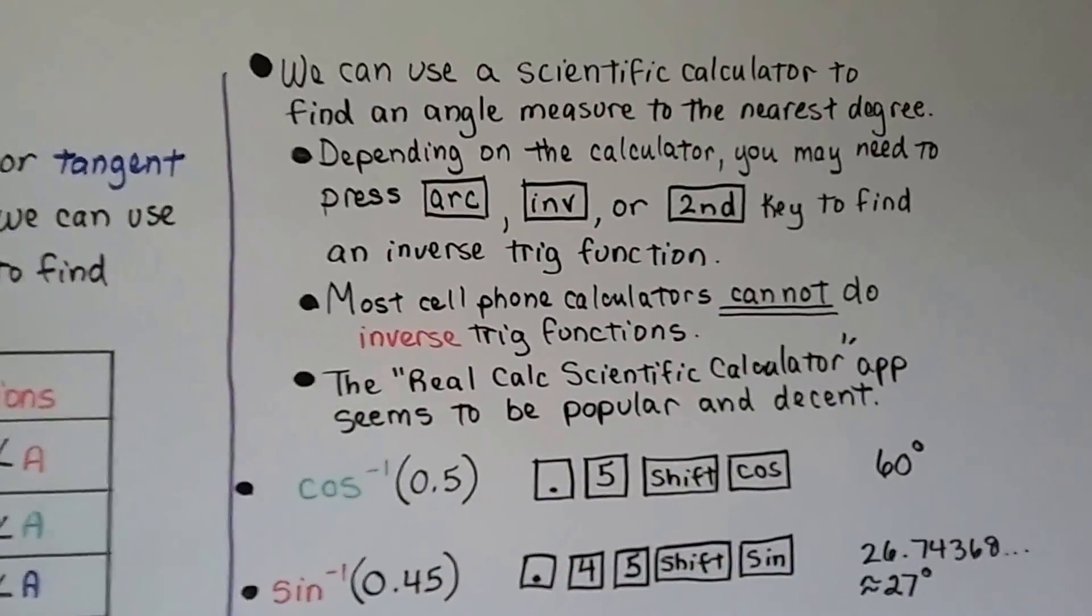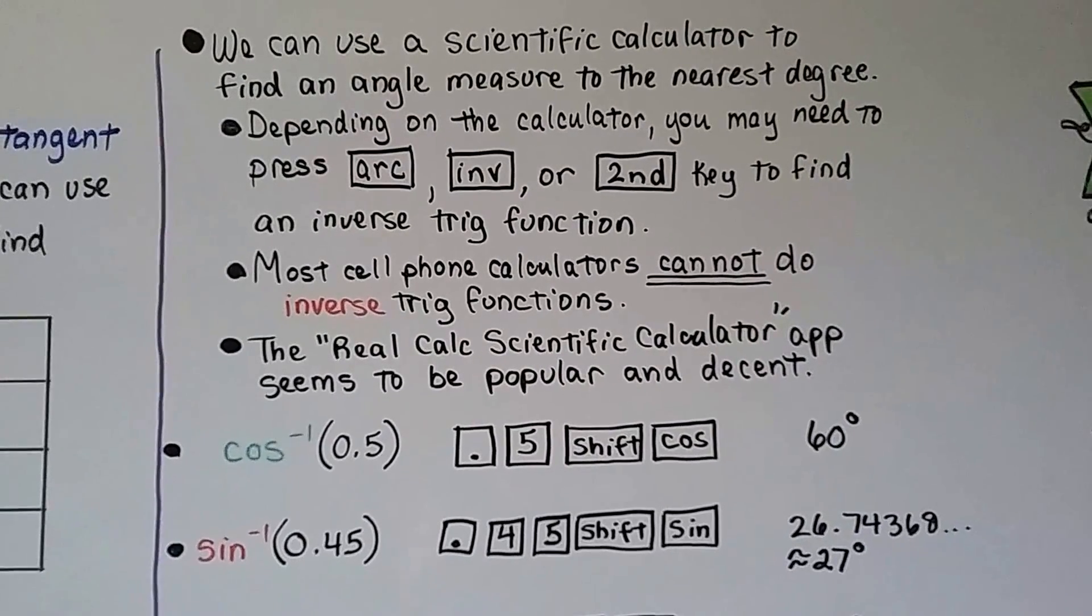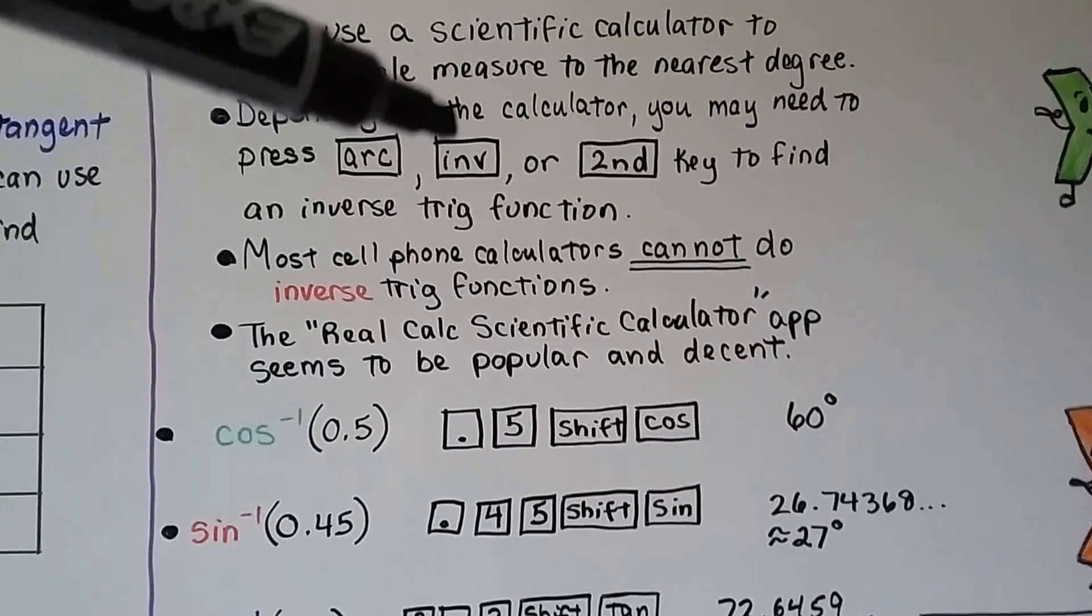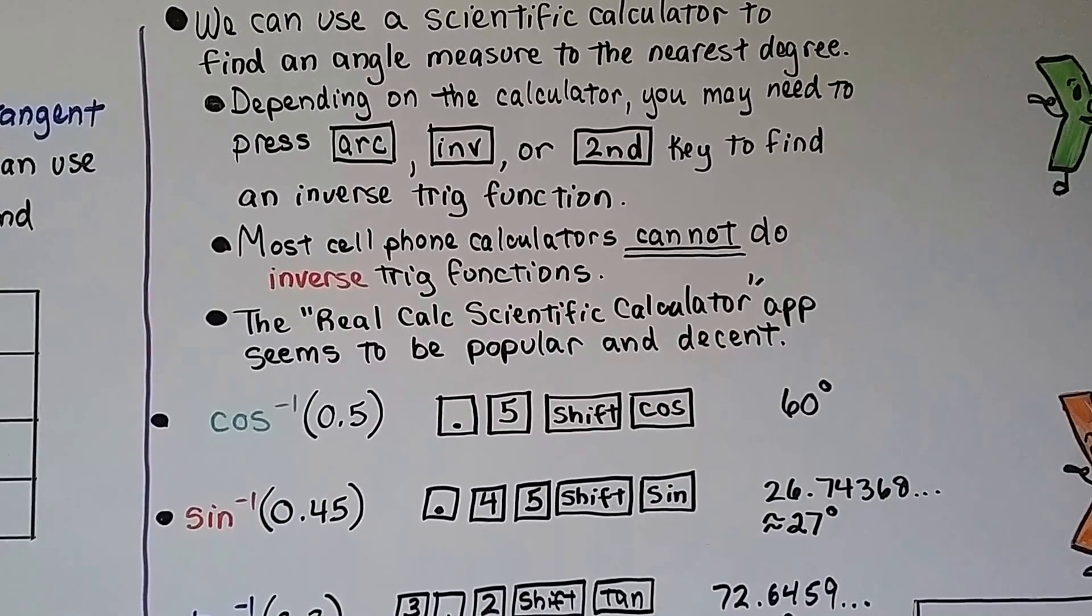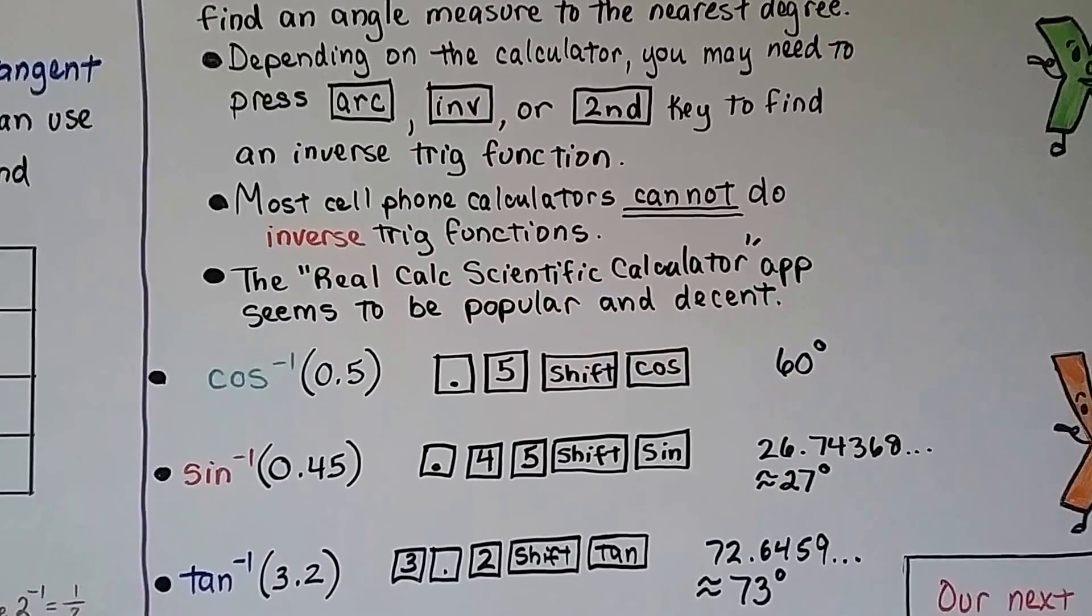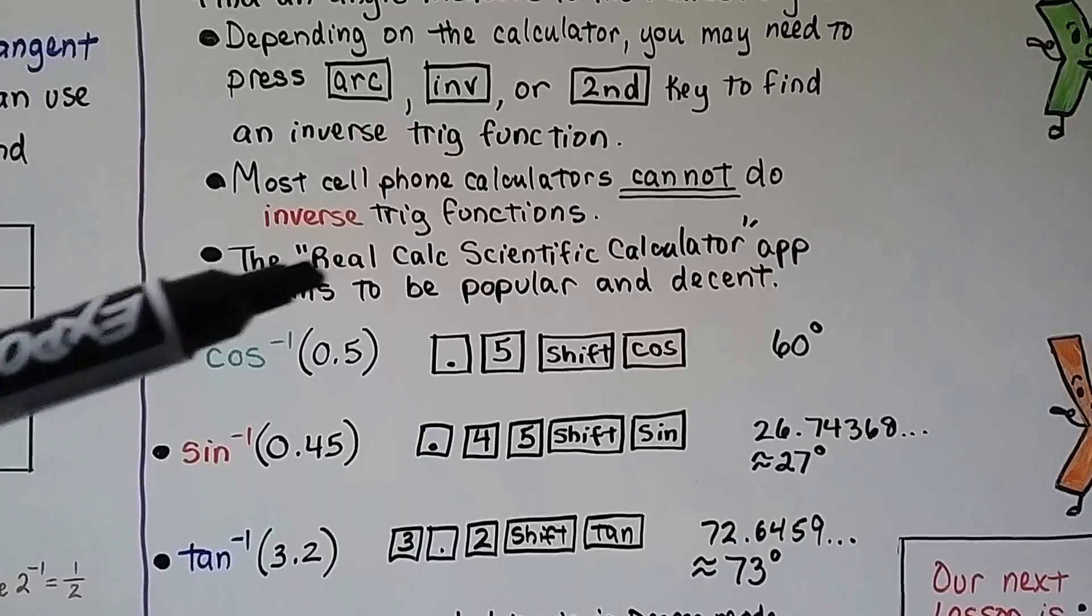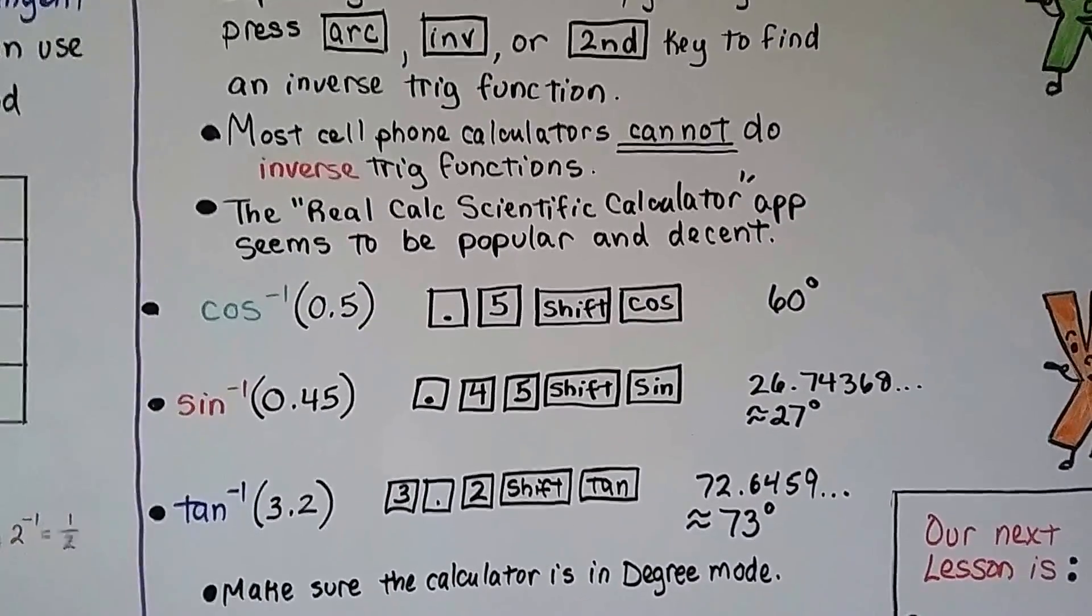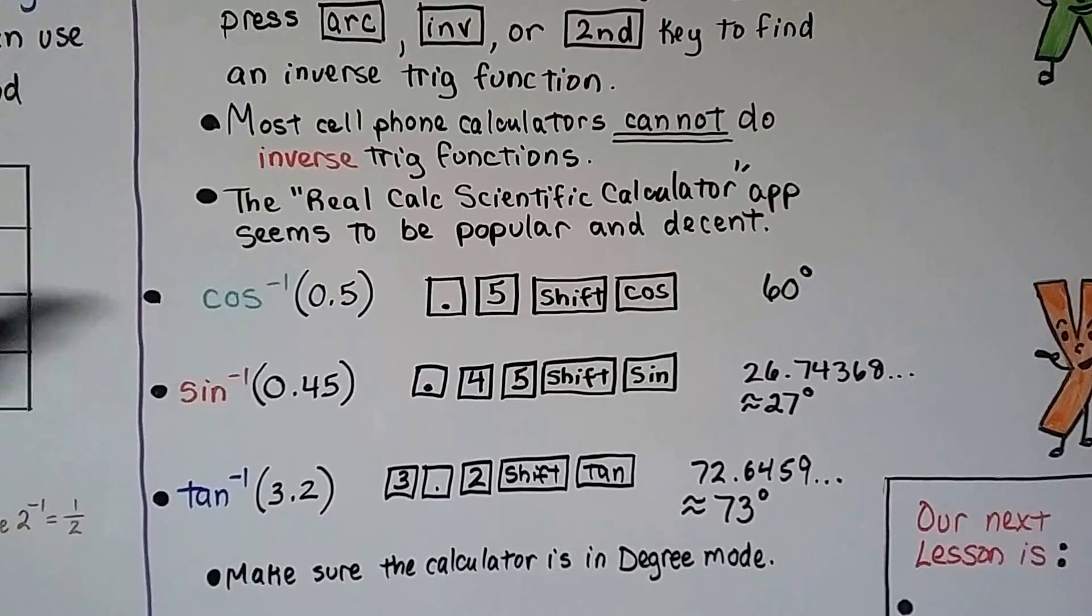We can use a scientific calculator to find an angle measure to the nearest degree. Depending on the calculator, because they're all so different, you may need to press the arc key, the inverse key, or the second key to find an inverse trig function. Most cell phone calculators cannot do inverse trig functions. I know you can't do it on an Android phone. But there's an app you can get called the Real Calc Scientific Calculator, and it's popular and decent.